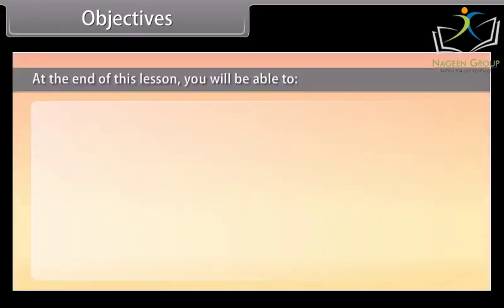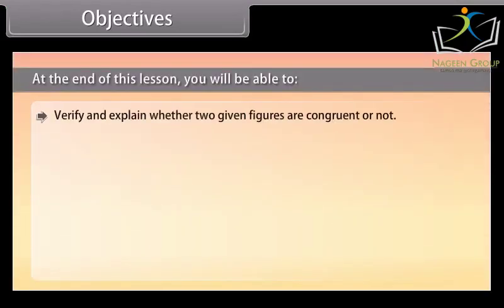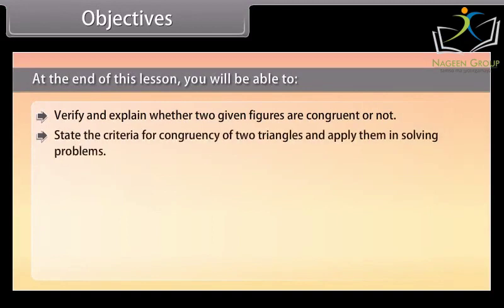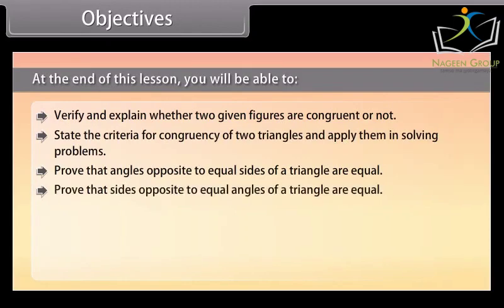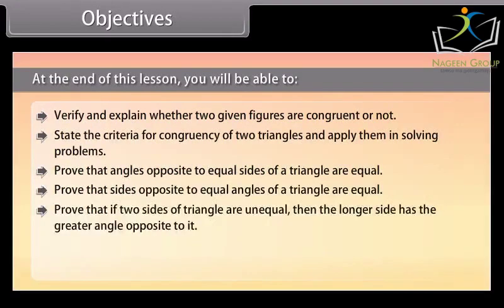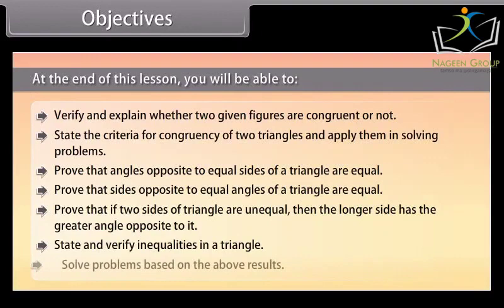At the end of this lesson, you will be able to: verify and explain whether two given figures are congruent or not; state the criteria for congruency of two triangles and apply them in solving problems; prove that angles opposite to equal sides of a triangle are equal; prove that sides opposite to equal angles of a triangle are equal; prove that if two sides of a triangle are unequal, then the longer side has the greater angle opposite to it; state and verify inequalities in a triangle; and solve problems based on the above results.